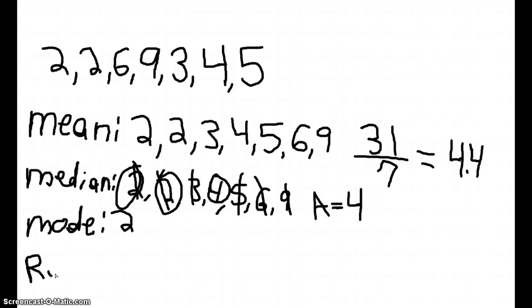And to find the range... You would need to find the greatest number and the least number. And the greatest number is 9 and the least number is 2. So, you take 9, the greatest number, minus the lowest number, which would be 2. And then, you get your answer, which is 7.